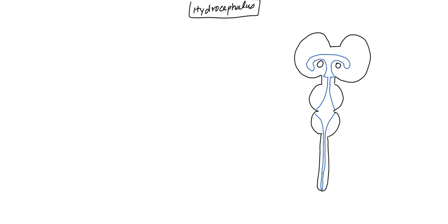Just to give a little more orientation: right above here is the corpus callosum, and then this is divided laterally by the septum pellucidum. Just right above here we have the caudate nucleus right above the thalamus as well. Also, right behind here is the cerebellum — the cerebellum encompasses the pons and the medulla.